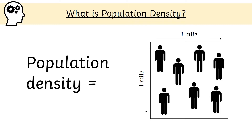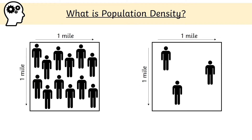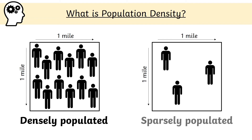Population density is the average number of people living in an area. We usually measure population density as the number of people on average living in a square mile — roughly the size of Oakengates and St George's combined. If there is a high number of people on average per square mile, we say the area is densely populated. If there is a low number, we say the area is sparsely populated.